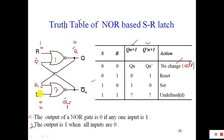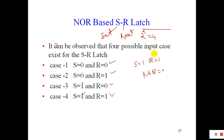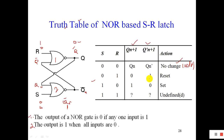For R=1 and S=0, the next value of Q will be 0. Because when R is 1, the output is 0. When R equals 1, R makes the Q reset. This is called the Reset condition — whatever the previous value of Q, you will get Q equal to 0.